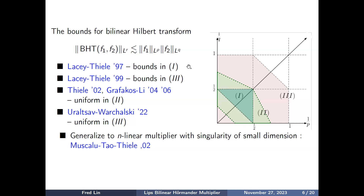Extending the range of exponents for the bilinear Hilbert transform is harder. Lacey–Thiele first proved boundedness in the local L^2 region, and two years later extended the range further so that the target space p is greater than two-thirds. There is still a gap between two-thirds and one-half; this part remains unknown. When p is less than one-half there are known counterexamples.